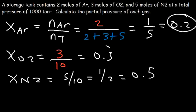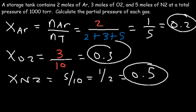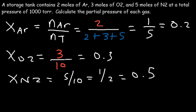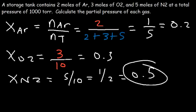Adding these three numbers, the total mole fraction equals 1: 0.2 plus 0.3 plus 0.5 is 1. A mole fraction of 0.2 for argon means 20 percent of all molecules in this container is argon. So if we have 100 gas molecules, 20 are argon, 30 are oxygen, and 50 are nitrogen. The mole fraction is the decimal form of percent — the container has 50 percent nitrogen, 30 percent oxygen, and 20 percent argon by quantity.